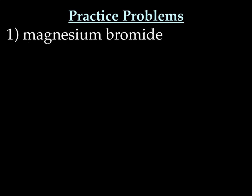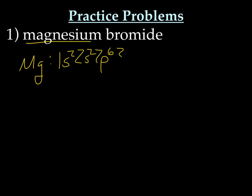Number 1 — let's see how you did. We're going to be writing a formula this time, starting with magnesium as the cation, the positive one. So we have 1s2, 2s2, 2p6, 3s2. For magnesium to become like a noble gas, it's a metal so it's going to lose electrons. That's like neon configuration, so magnesium is going to be Mg2+.